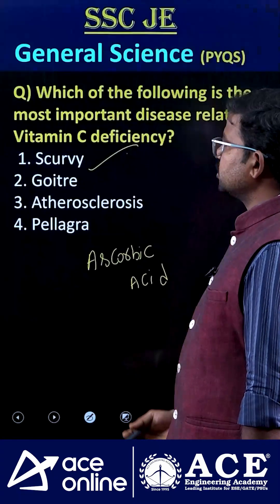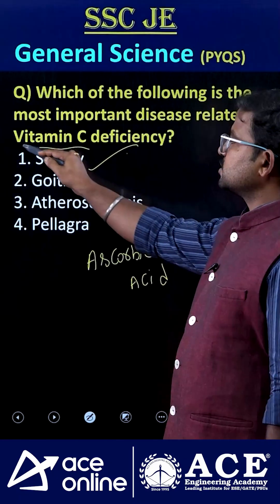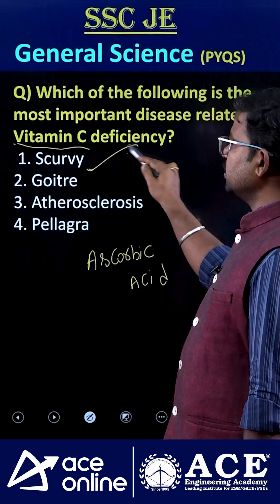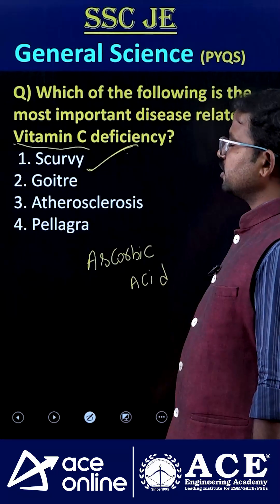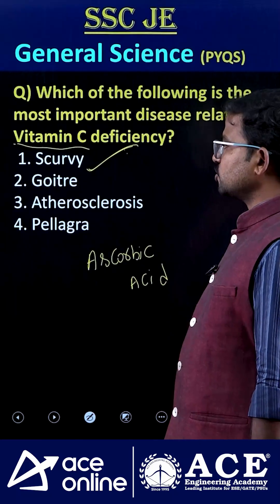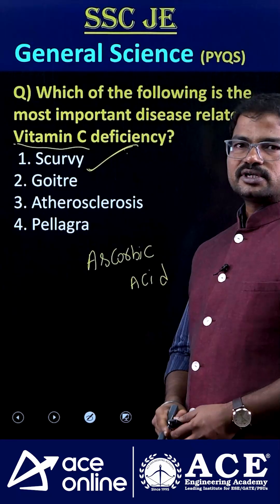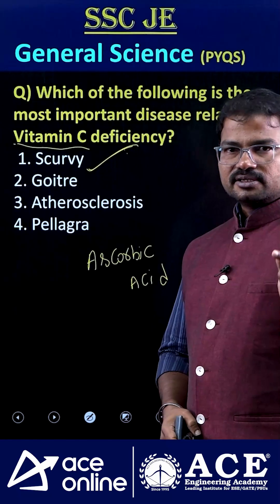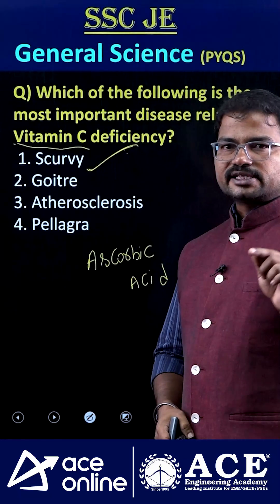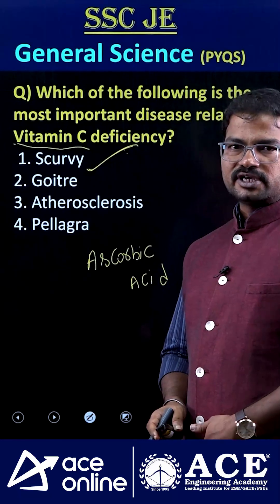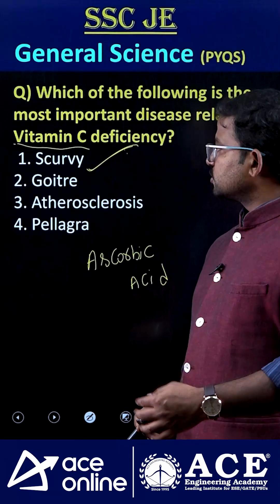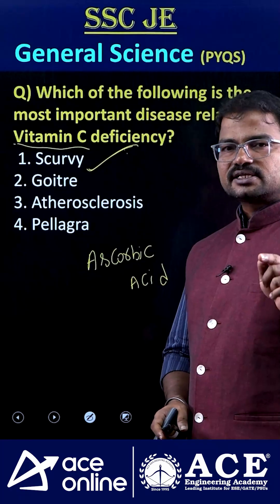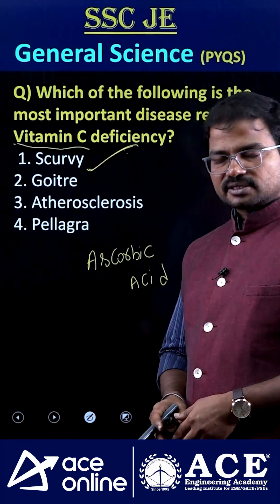Scurvy is caused by the deficiency of vitamin C only, which is why the correct answer is option one. As for goiter — which deficiency is responsible for goiter? If you know the answer, please comment. Thank you.